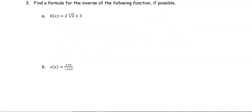In this example, we are going to find the inverse of the following function, if possible. In part a, h of x equals 2 times the fifth root of x plus 3. In part b, h of x equals x plus 4 divided by negative x plus 3.